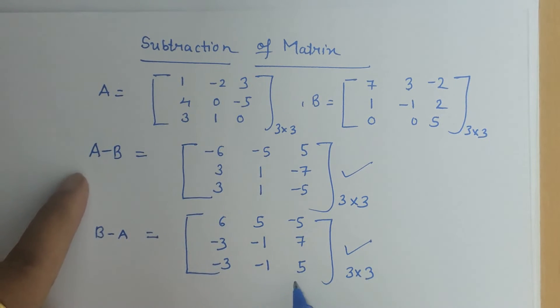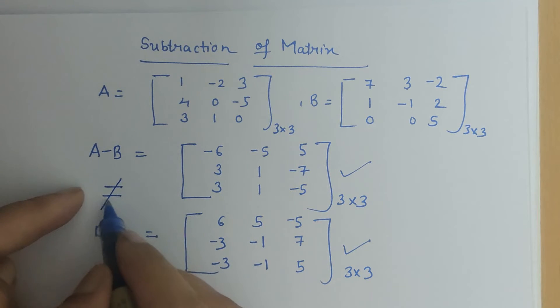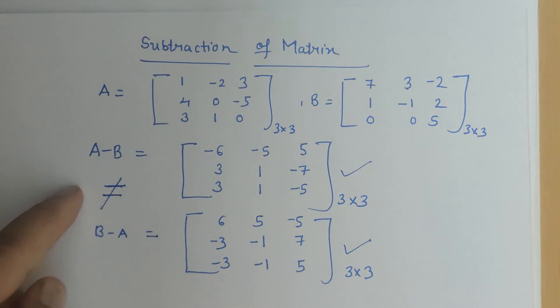So what we understand that A minus B and B minus A not necessarily be equal to each other every time. So they are unequal hence they are not commutative. What is not commutative? Matrix subtraction is not commutative.